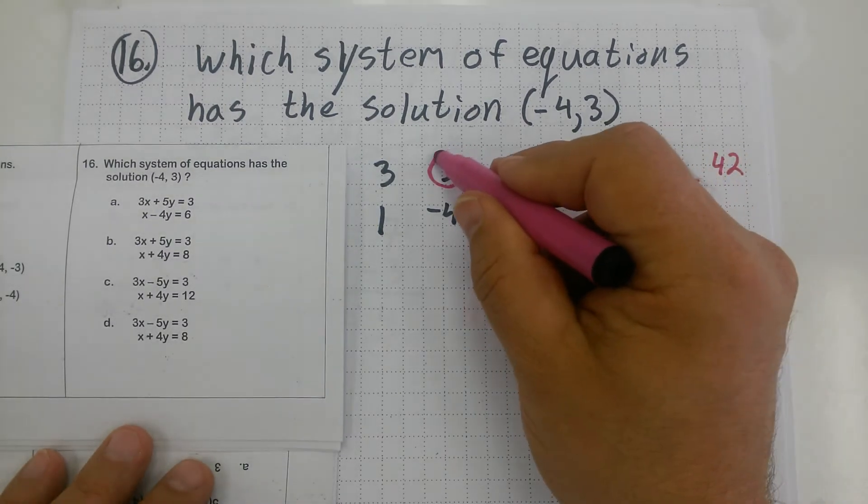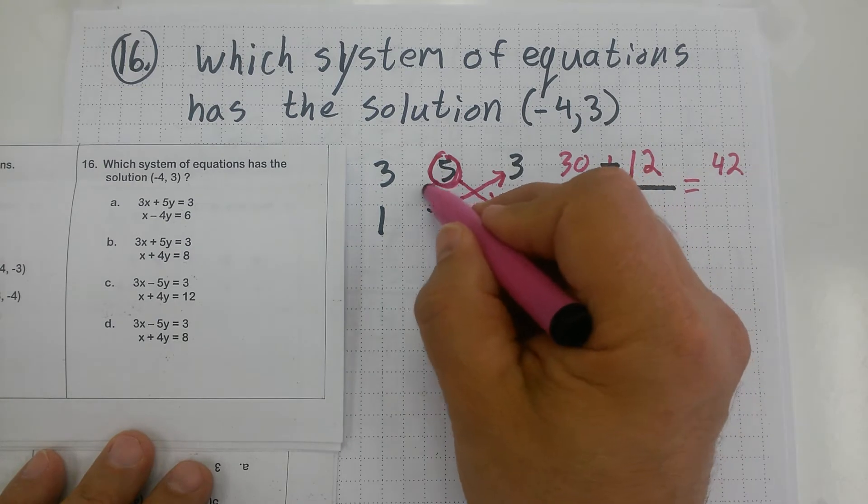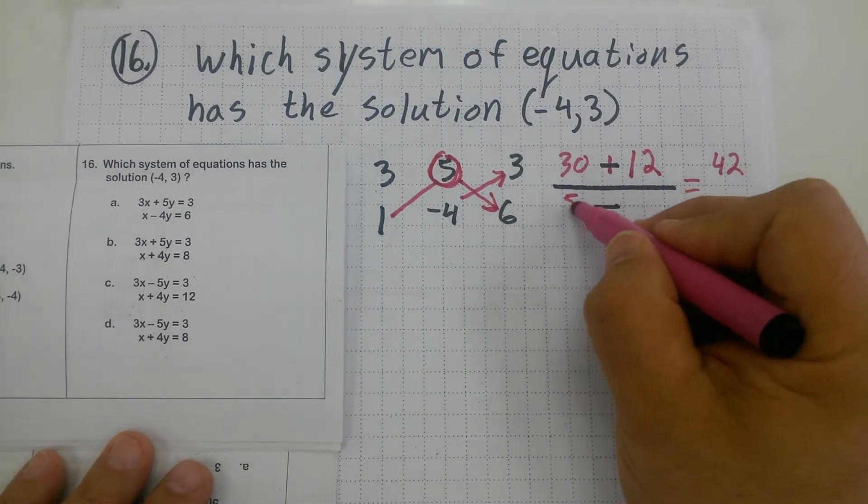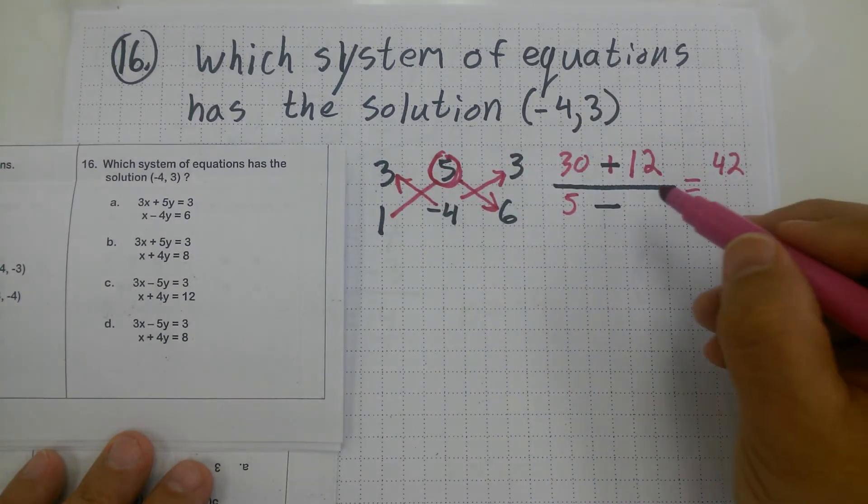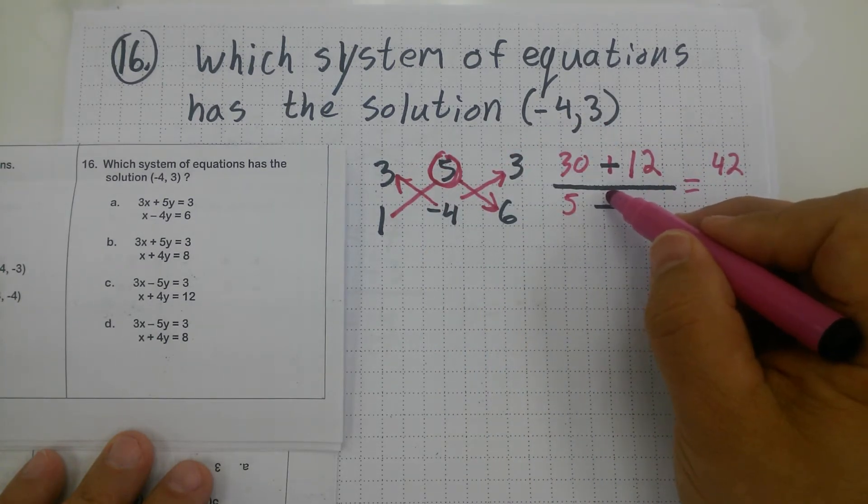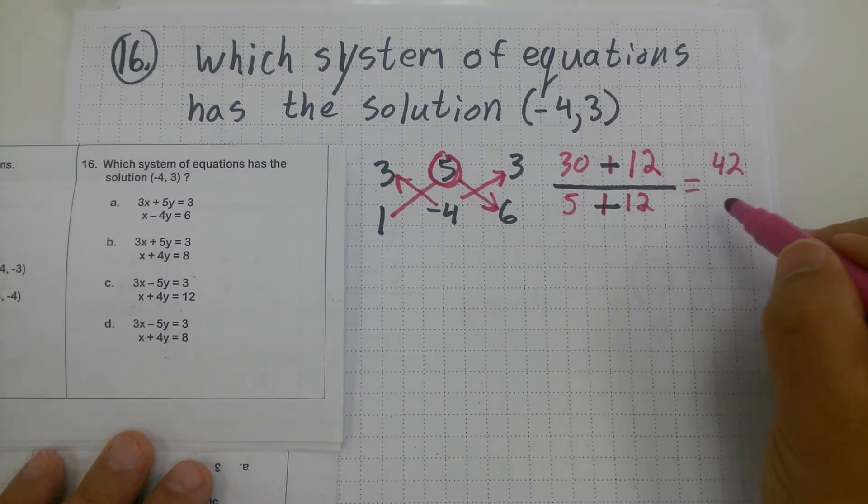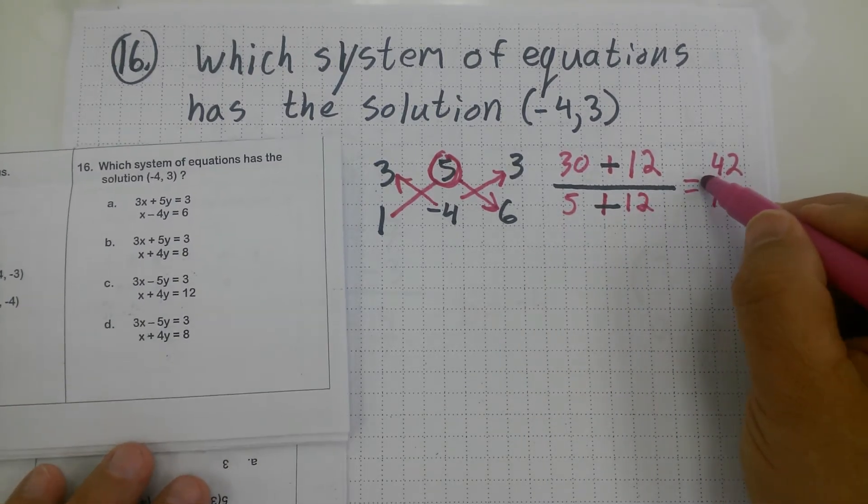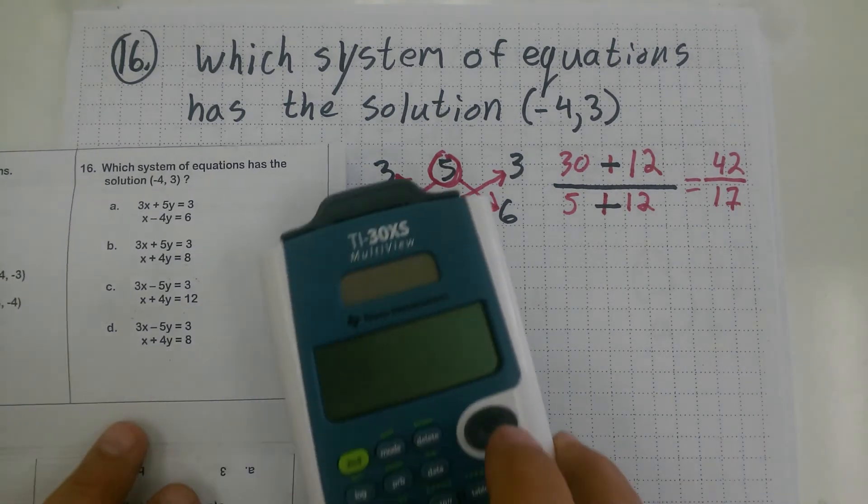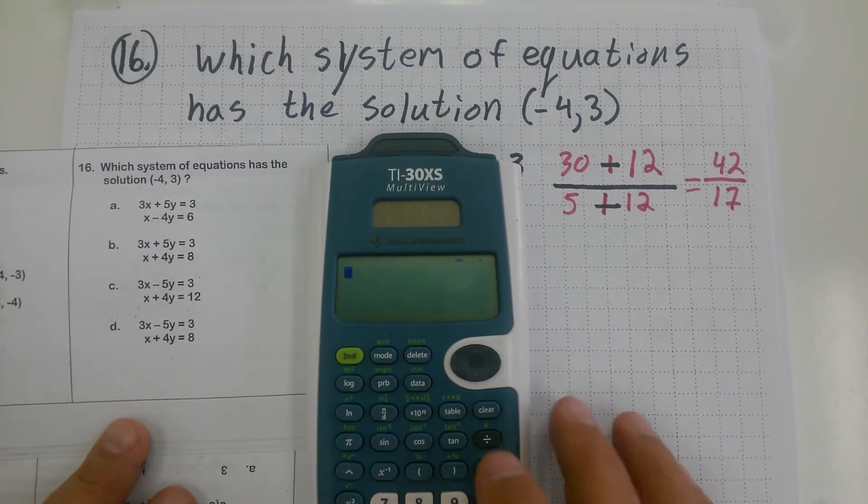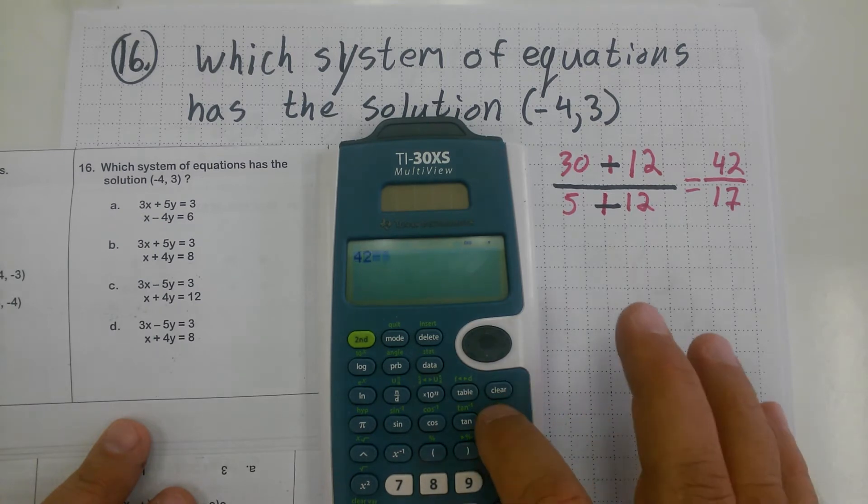Now, I go back to that pivot, 5, and I do 5 times 1, which is 5, and then negative 4 times 3, which is negative 12. So a negative negative again is going to give me positive 12, and that's going to give me 17. Now, 42 divided by 17 is not 4. Let me see. 42 divided by 17.